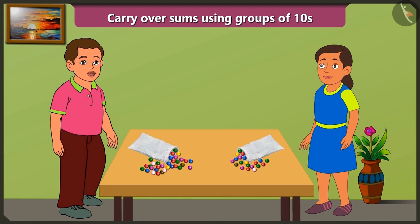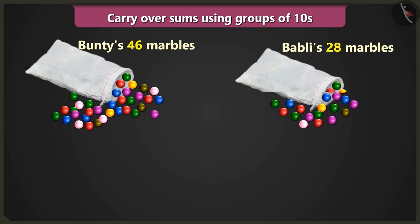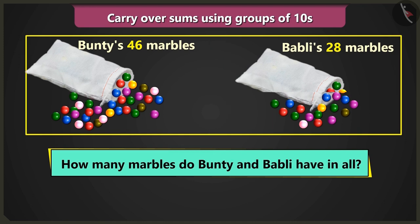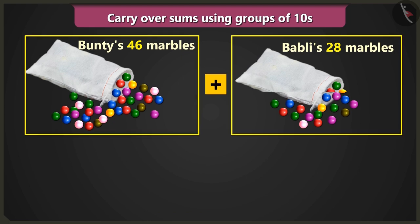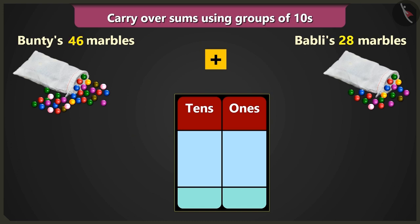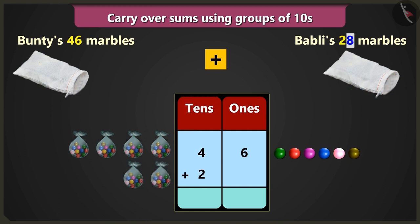Yes, look Bubbly — now after winning more marbles, I have a total of 46 marbles and I have 28 marbles. So how many marbles do we have together right now? Come on, let us add 46 and 28. I have 4 tens and 6 ones — 46 marbles. So we will write 4 in the box of tens and 6 in the box of ones. Yes, and I have 2 tens and 8 ones, so we will write 2 in the box of tens and 8 in the box of ones.